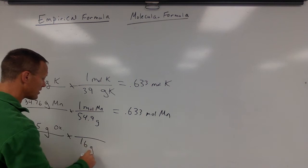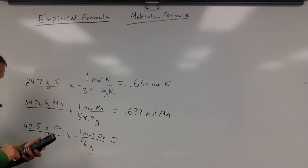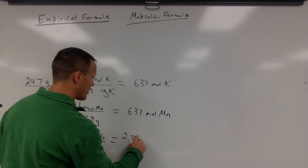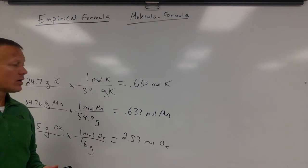Oxygen is 16 grams per mole. So we're going to say 16 grams is a mole of oxygen. So 40.5 divided by 16 is 2.53 moles of oxygen.